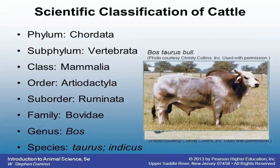What does this mean in layman terms? Kingdom animalia is all the animals collectively. Phylum chordata are animals with backbones. Class mammalia means warm-blooded, giving birth to live young ones which are then fed with milk produced by special mammary glands in the mother. Humans too belong to mammalia. Order artiodactyla means even-toed hooved animals. Family bovidae — all are ruminants, and they have a stomach with many chambers.